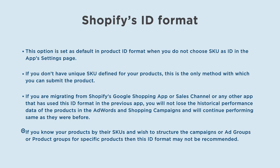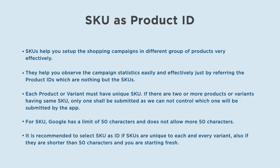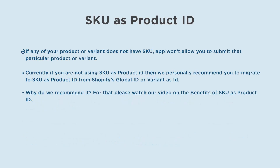If you know your products by their SKUs and wish to structure campaigns, ad groups, or product groups for specific products, then this ID format may not be recommended. SKUs help you set up shopping campaigns in different groups of products very effectively. They help you observe campaign statistics easily, just by referring to the product IDs which are the SKUs. Each product or variant must have a unique SKU — if two or more products or variants share the same SKU, only one will be submitted, as the app cannot control which one gets selected. If any product or variant does not have a SKU, the app won't allow you to submit that particular item.